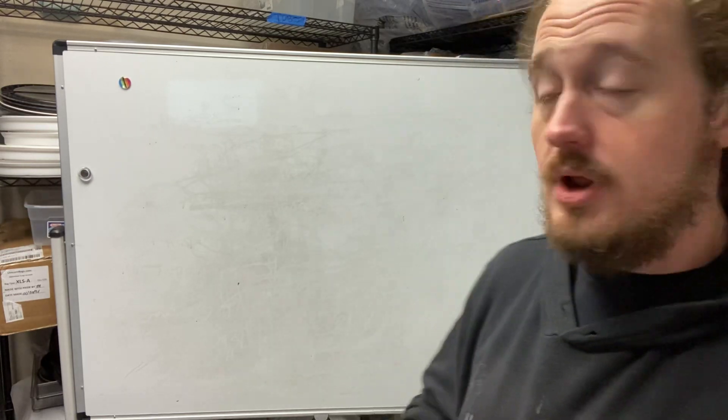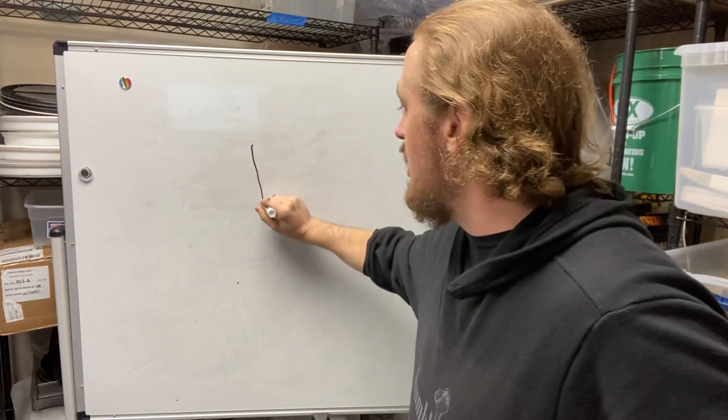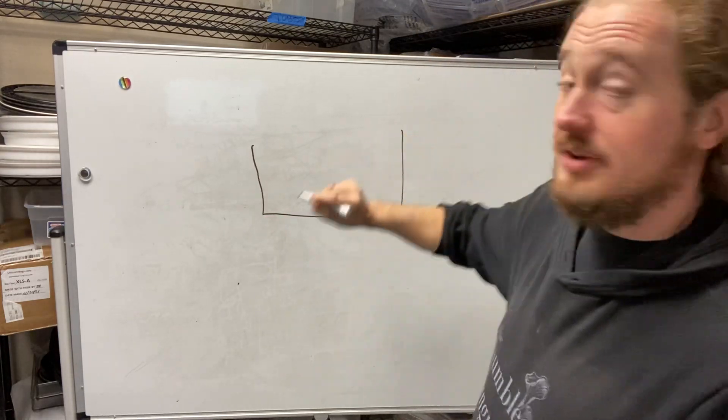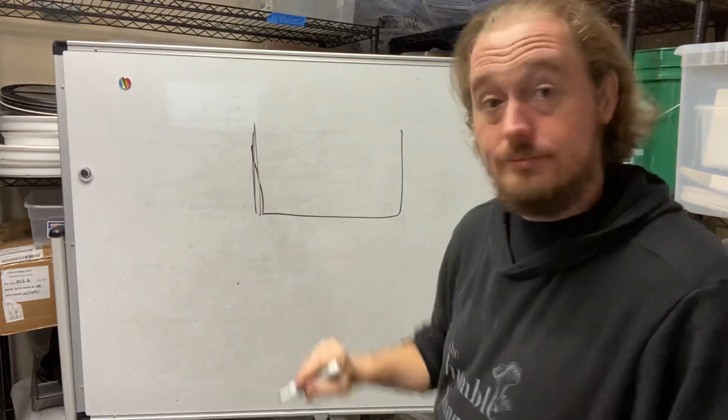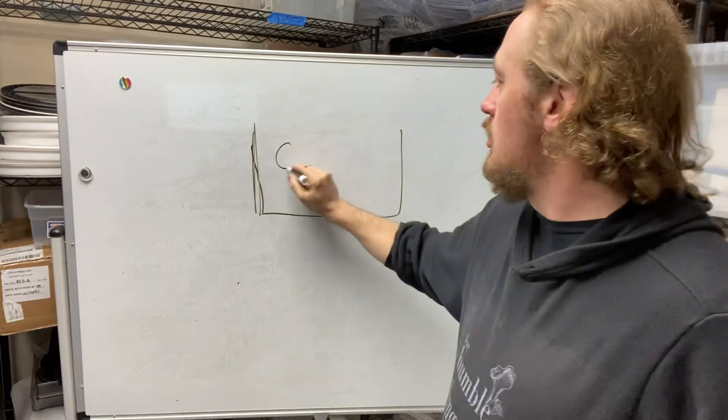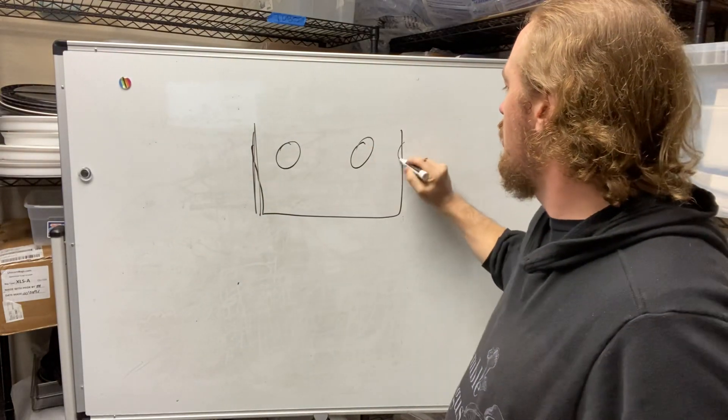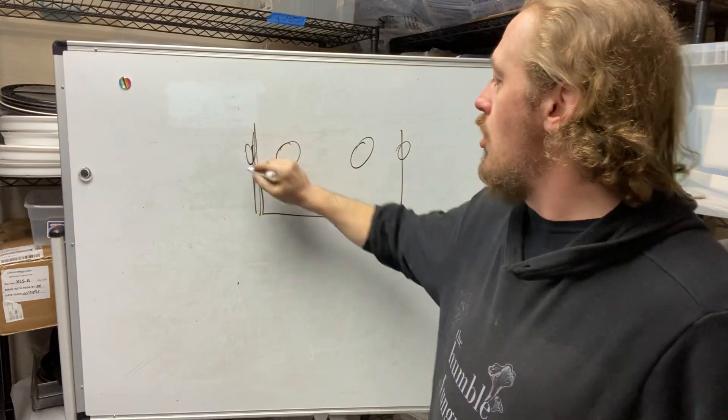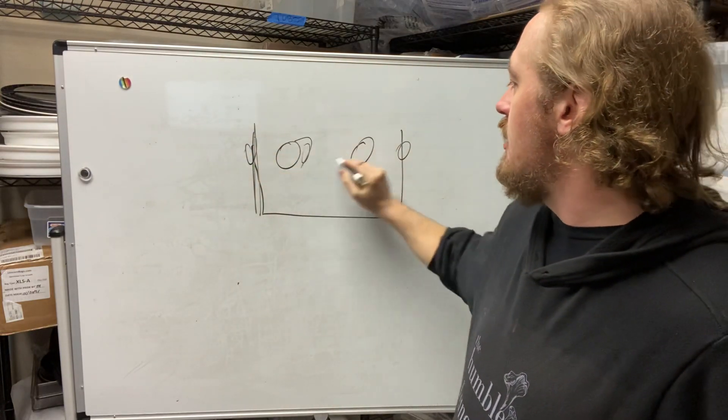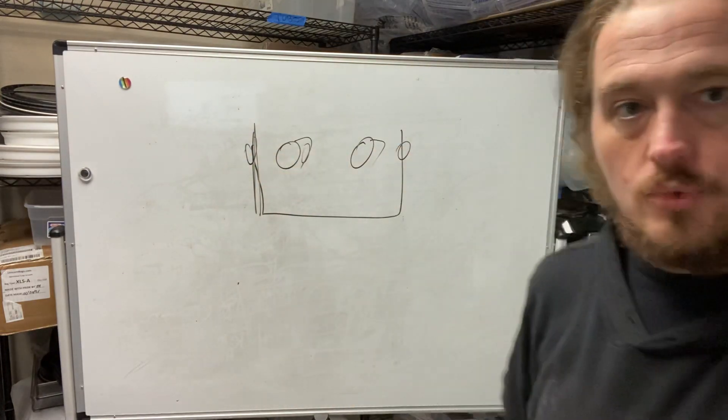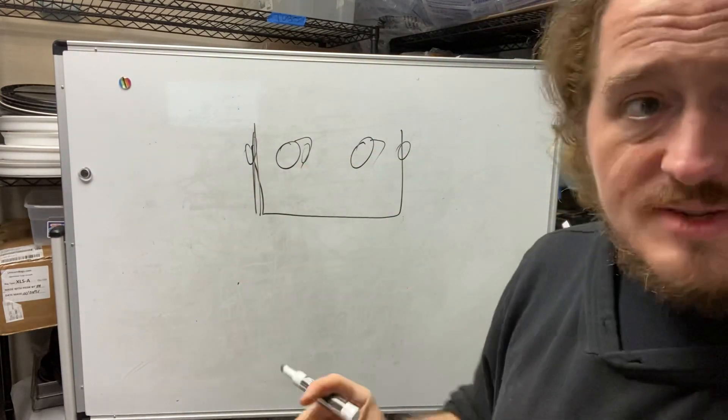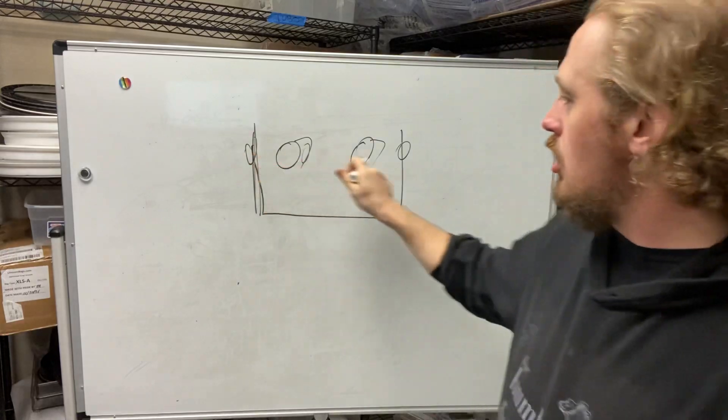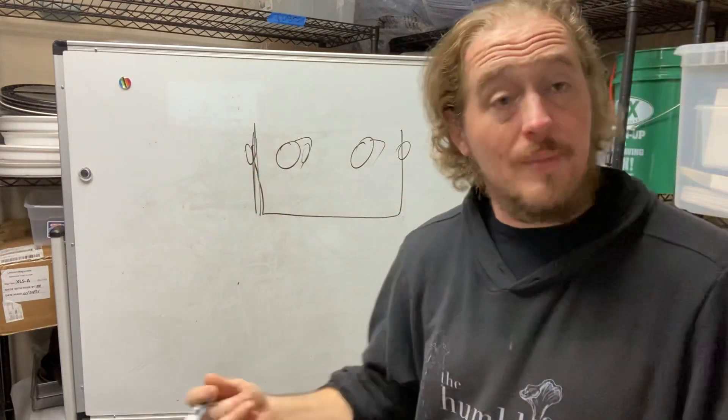So let's pause for a second and let's go back to what we built yesterday. Yesterday we built a monotub. What this is is a clear plastic tote that we have drilled one, two, three, four, and then five, six holes. Two on the broad side, one each on the long side. These holes were all around the same level, doesn't really matter.